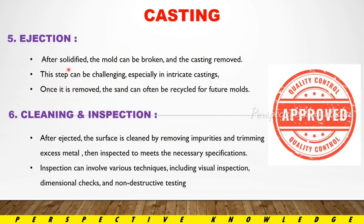The fifth step is ejection. The mold can be broken and removed. This step can be challenging, especially for intricate castings. Once it is removed, the sand can be recycled for future molds. We remove the sand from the side of the metal material, and the product is solid. We can reuse the same pattern and mold.